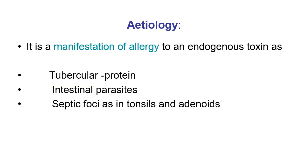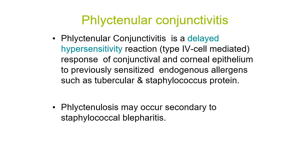The etiology of phlyctenular conjunctivitis: it is a manifestation of allergy to an endogenous toxin. The endogenous toxin can be tubercular protein, intestinal parasites, or septic foci as seen in tonsils and adenoids. It is a delayed hypersensitivity reaction — a type 4 cell-mediated response of conjunctival and corneal epithelium to a previously sensitized endogenous allergen.